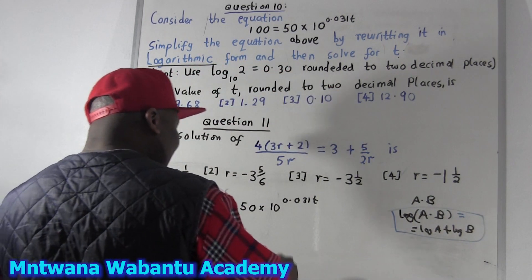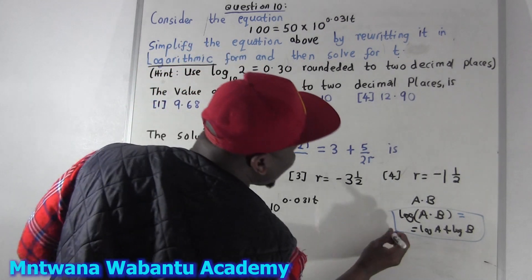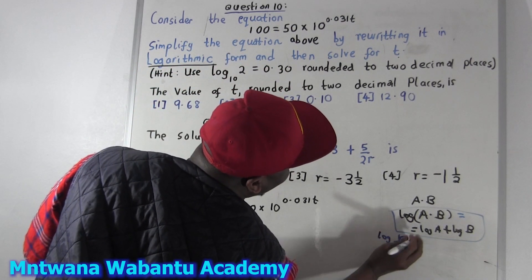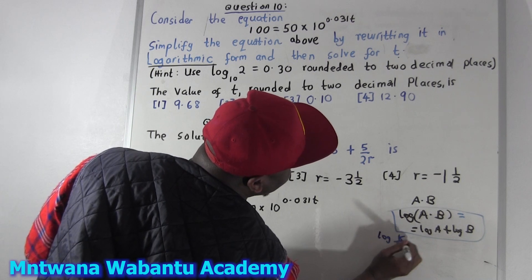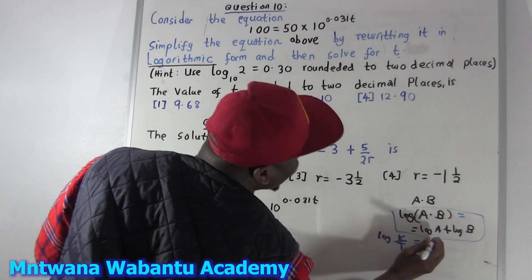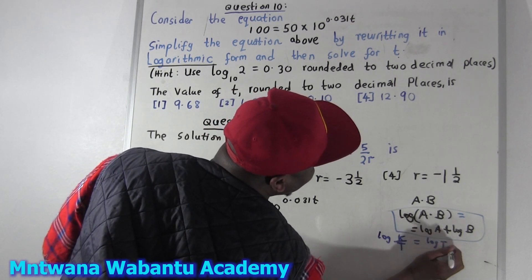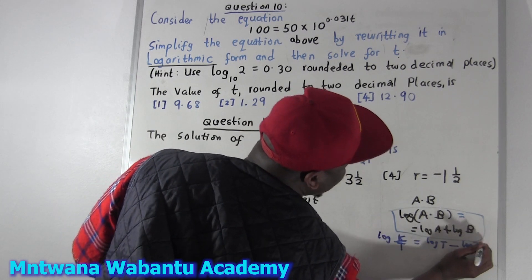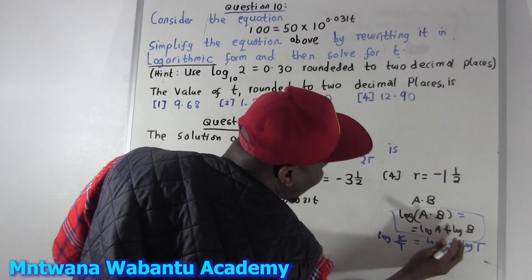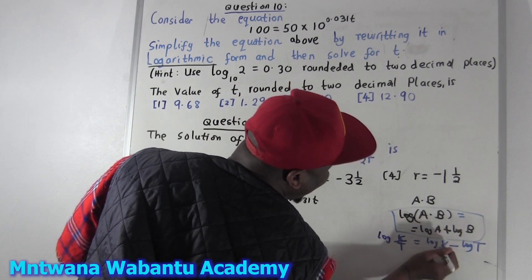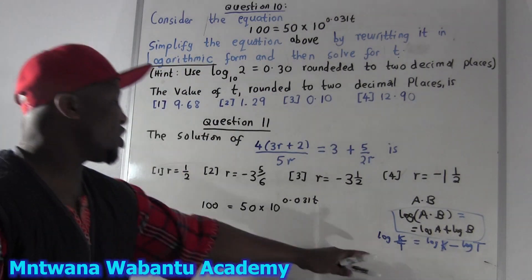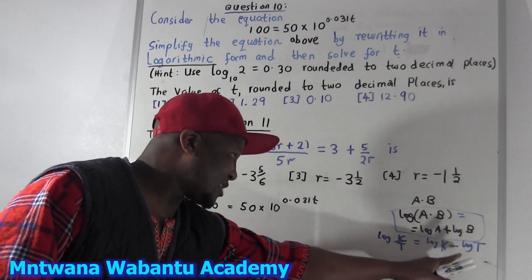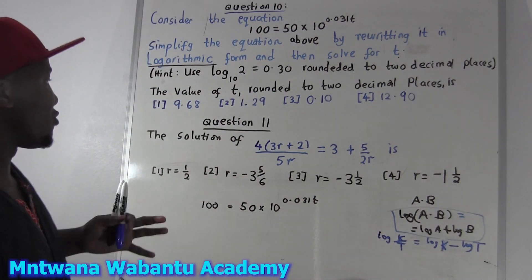How about division? For division, if somebody says log of k over t, you take the first one minus the second: log of k minus log of t. If it's division, take log of the top minus log of the bottom. This is the logarithmic rule.